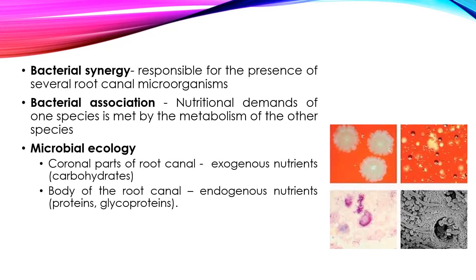The microbial ecology in the coronal part of the root canal is dependent upon exogenous nutrients such as carbohydrates, whereas in the middle and apical portions, you have endogenous nutrients which are proteins and glycoproteins. Depending upon what kind of nutrition the bacteria require, in the coronal portion there are different microorganisms found, and the isolated organisms from the middle and apical thirds are different.